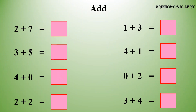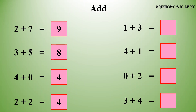2 plus 7 is equal to 9. 3 plus 5 is equal to 8. 4 plus 0 is equal to 4. 2 plus 2 is equal to 4. 1 plus 3 is equal to 4. 4 plus 1 is equal to 5.